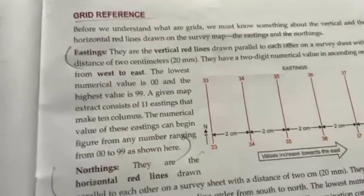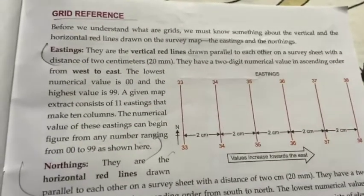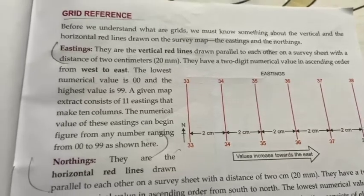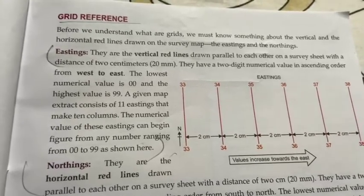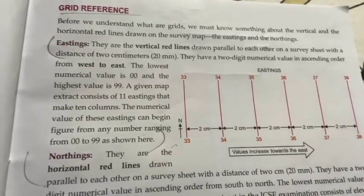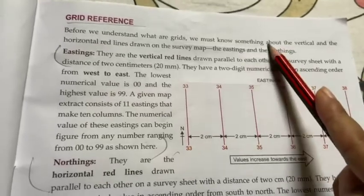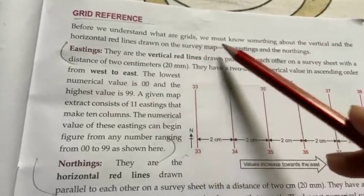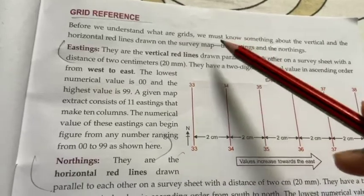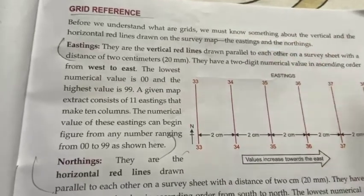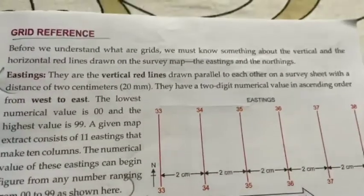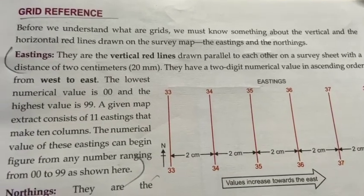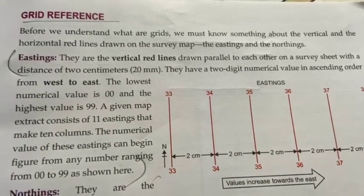Now we will start with grid reference. ये बहुत ही important है, यही हमारा main topic है। Grid reference में, आपको बता दूँ कि what are grids — we must know about the vertical and horizontal red lines drawn on the survey map। Survey map में horizontal और vertical lines बनी होती हैं — topographical maps में।